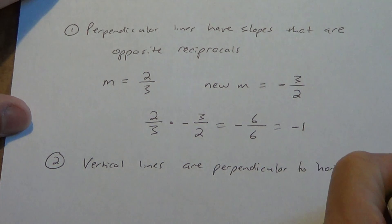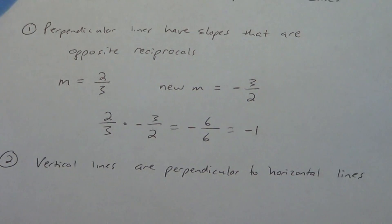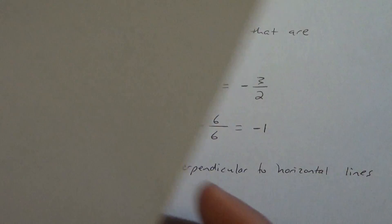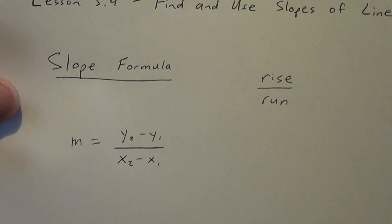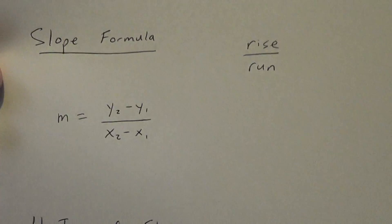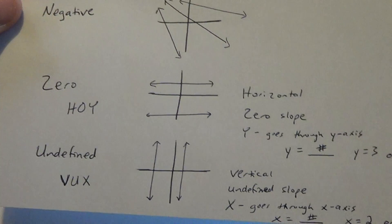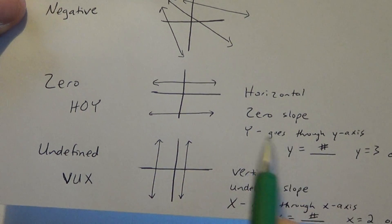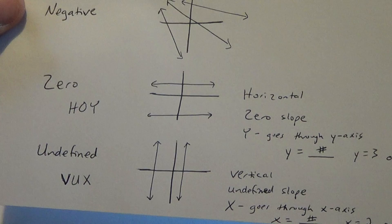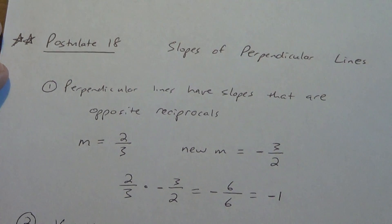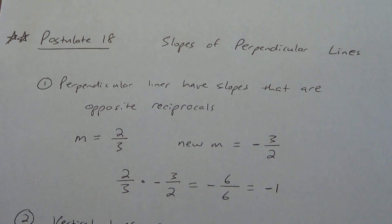Any time you have a vertical line and a horizontal line, they are automatically perpendicular to each other. To summarize: know your slope formula m equals y2 minus y1 over x2 minus x1, understand rise over run, know the four types of slopes (positive, negative, zero, undefined), use HOY and VUX to remember horizontal and vertical lines, and know that parallel lines have equal slopes while perpendicular lines have slopes that are opposite reciprocals.